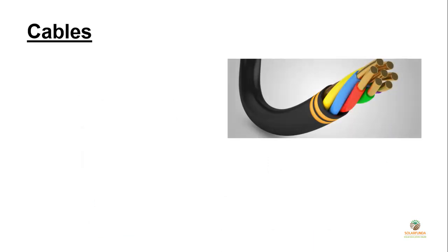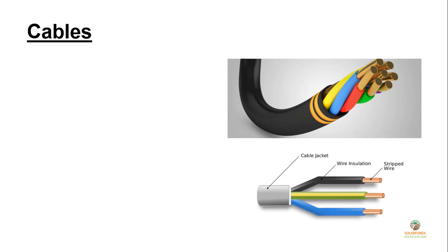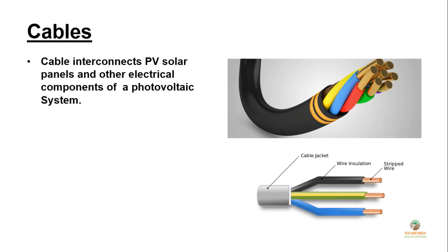Cables are very important in a PV system because cables interconnect PV solar panels and other components of the photovoltaic system. For example, cables are used to connect the solar panel to the inverter, where we use DC cable. On the other hand, AC cable is used to connect the inverter to the grid or load.